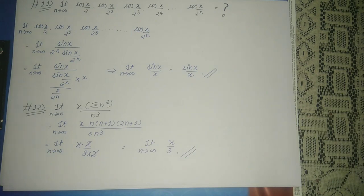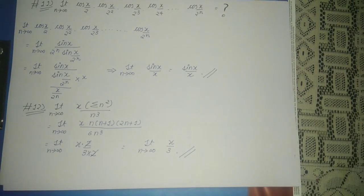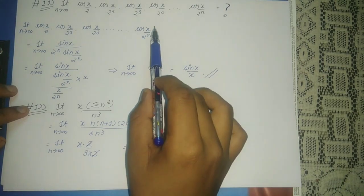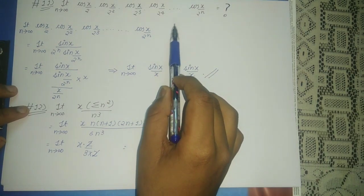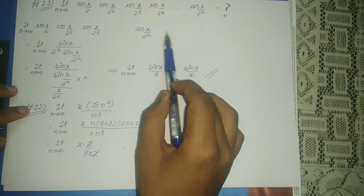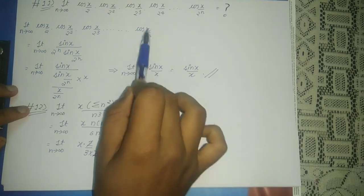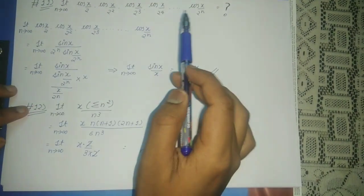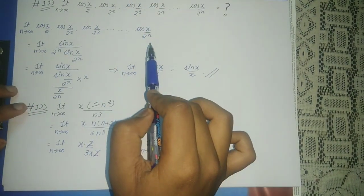...this can be obtained by multiplying and dividing by sin(x/2ⁿ). A successive multiplication cancels out, but for that we need to multiply and divide by 2 successively.